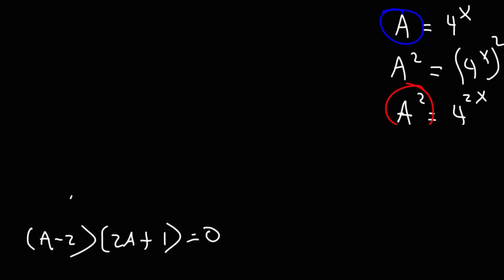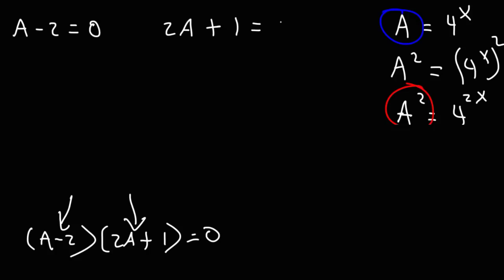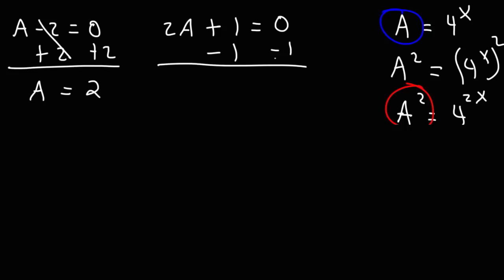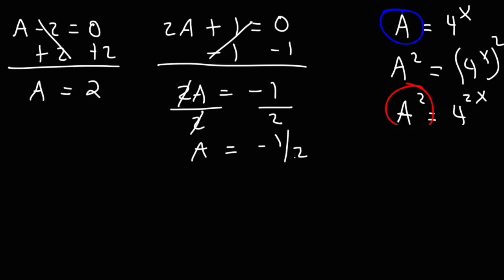Our next step is to set each factor equal to 0 using the zero product property. So we have a minus 2 equals 0, and the second factor, 2a plus 1, equals 0. For the first equation, adding 2 to both sides gives us a equals 2. For the second, subtracting 1 from both sides gives 2a equals negative 1, and then dividing both sides by 2, we get a equals negative 1 half.